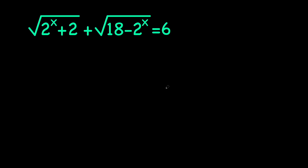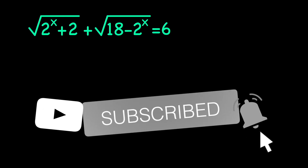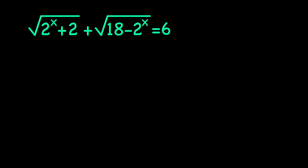Hey guys, in this video we're going to be solving an exponential radical equation where we have the square root of 2 to the x plus 2, plus the square root of 18 minus 2 to the x, equals 6, and we want to solve for x values. I'll be presenting two methods — even though they are somewhat similar, they are different, so make sure to watch till the end.